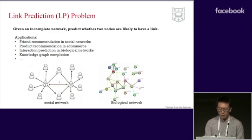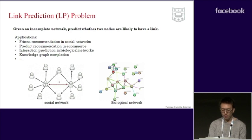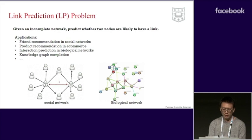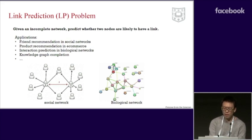Given an incomplete network, link prediction is to predict whether two nodes are likely to have a link. It has many applications such as friend recommendation, product recommendation, biological interaction prediction, knowledge graph completion, and so on.